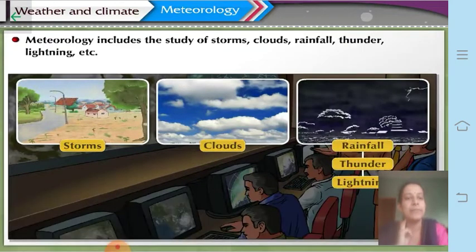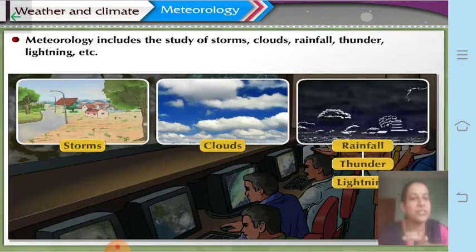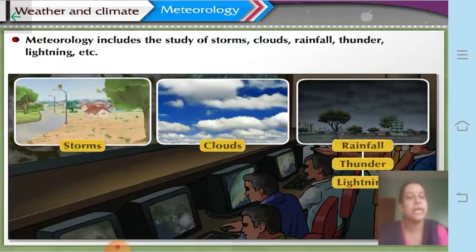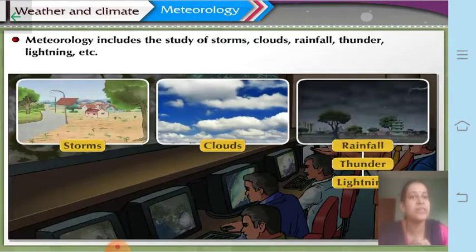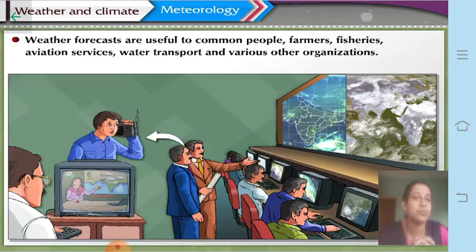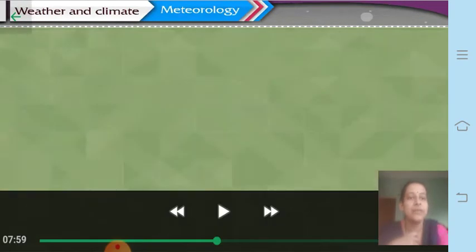The meteorological department provides information about whether there is going to be a storm, cloudy conditions, heavy rainfall, thundering and lightning. This is important because everybody's life is dependent upon the weather and climate of the place. Weather forecasts are useful to common people, farmers, fisheries, aviation services, water transport, and various other organizations.